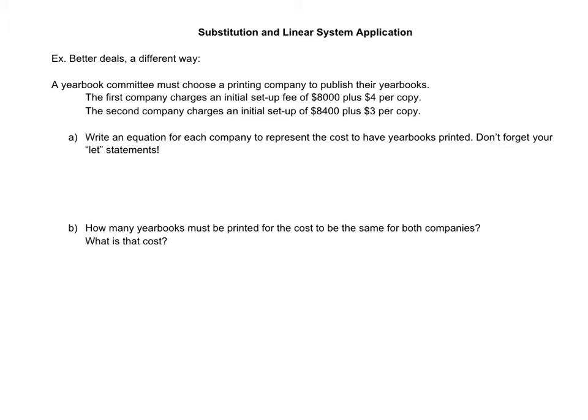A yearbook committee must choose a printing company to publish their yearbooks. The first company charges an initial setup fee of $8,000 plus $4 per copy — the initial setup fee is a Y-intercept, and the $4 per copy is your rate, so that's your slope. The second company charges an initial setup fee of $8,400 plus $3 per copy.